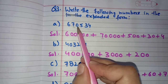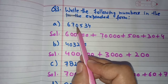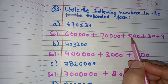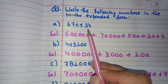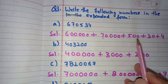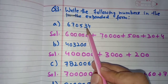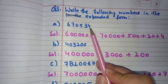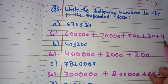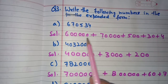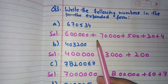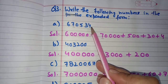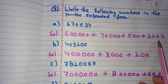Zero is skipped. Five is at the Hundreds place with 2 digits after it, so place value is 500. Three is at the Tens place with 1 digit after it, so place value is 30. Four is at the Ones place, so it is written as 4. We join all with addition signs, so the expanded form is: 6,00,000 + 70,000 + 500 + 30 + 4.